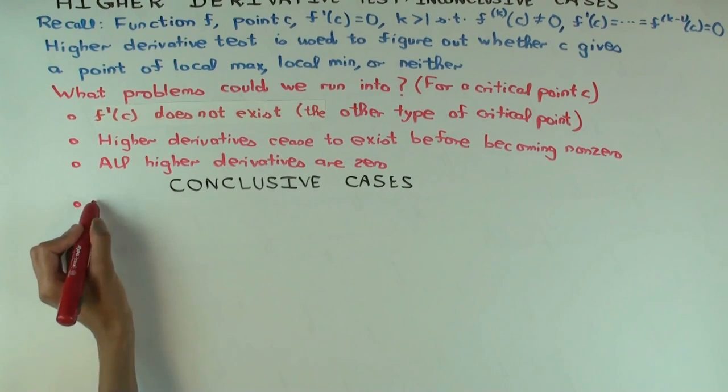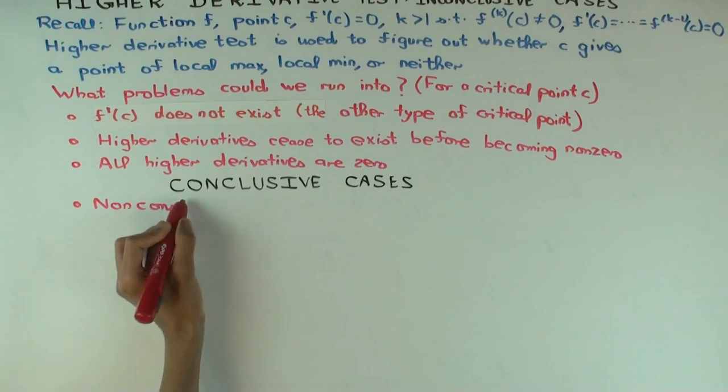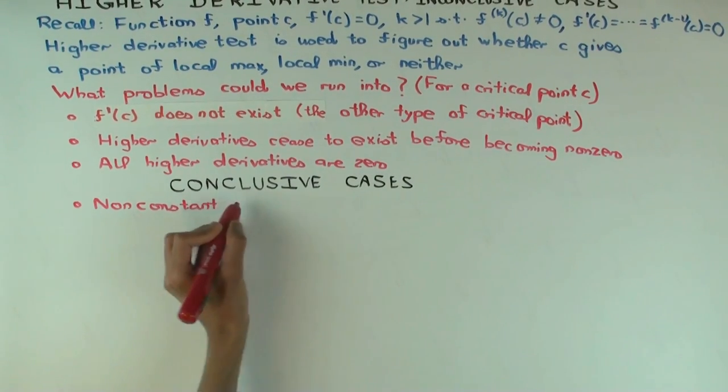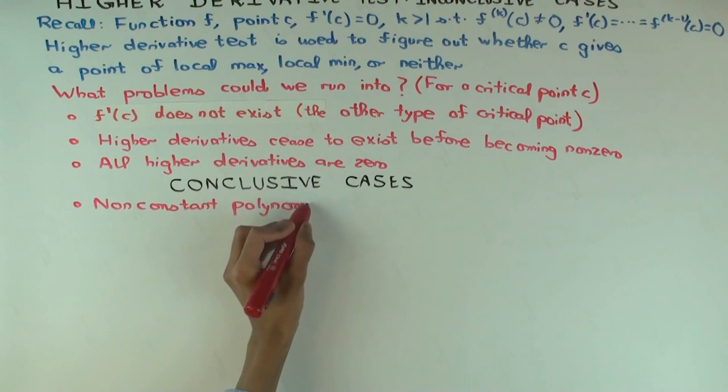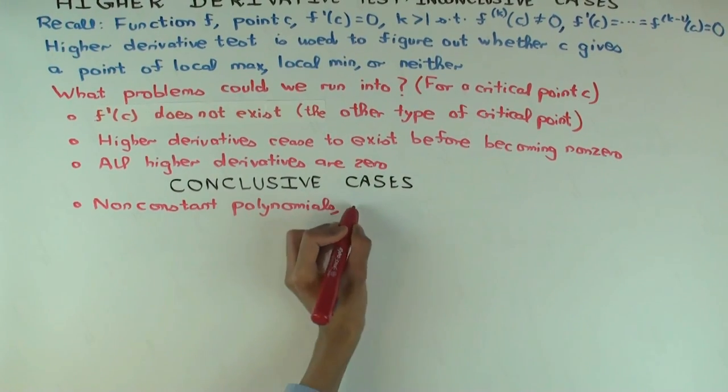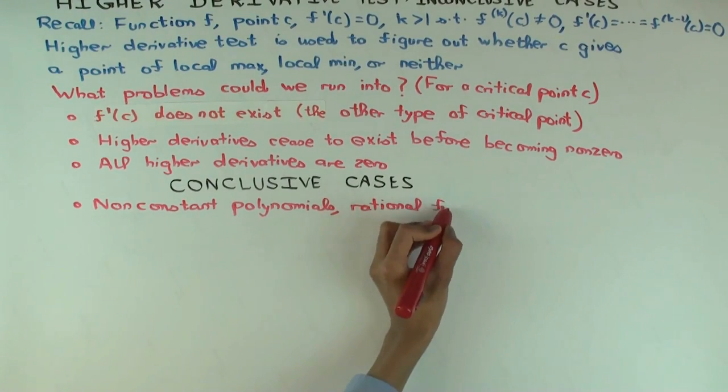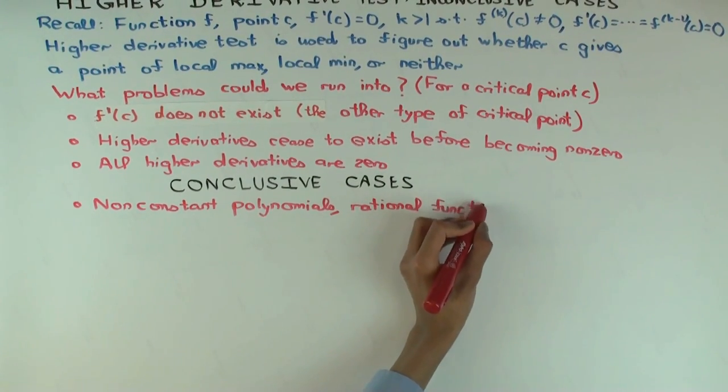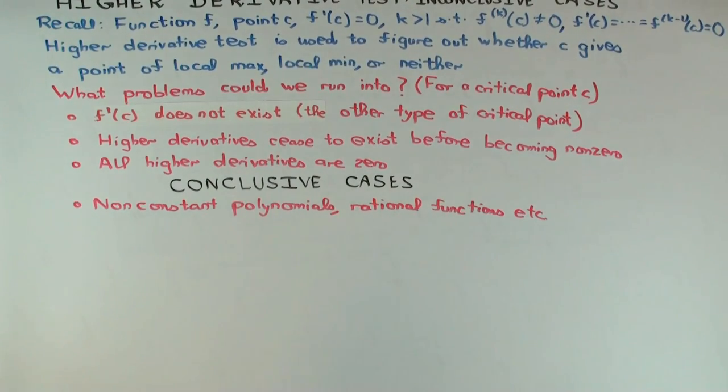So first on my list is non-constant polynomials, rational functions, etc. Well, that etc. actually includes things whose derivatives are rational functions, and there's some issues with those, so I'll leave the others aside. So, non-constant polynomials and non-constant rational functions.